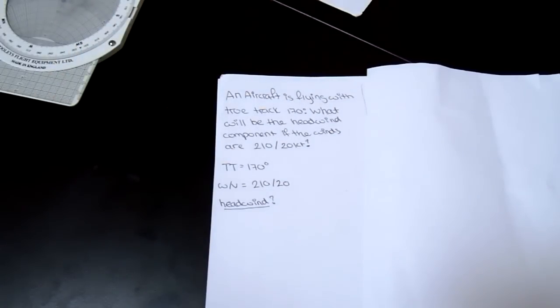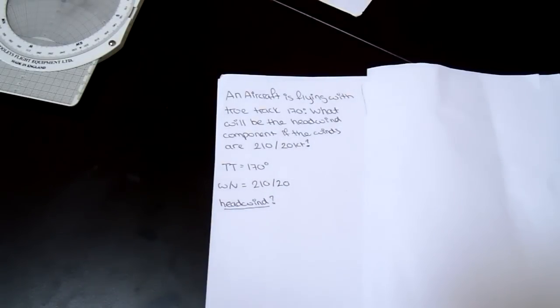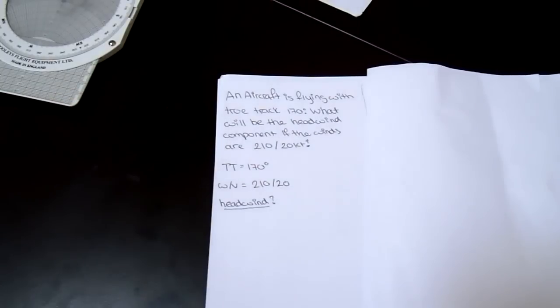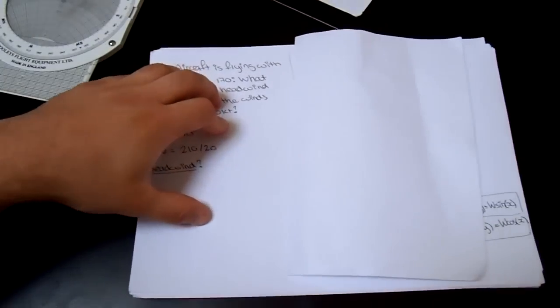So here is the question. An aircraft is flying with true track of 170 degrees. What will be the headwind component if the winds are 210, 20 knots? So as before, we write down the information we want, and now we're going to go into why the formulas I'm going to give you work.